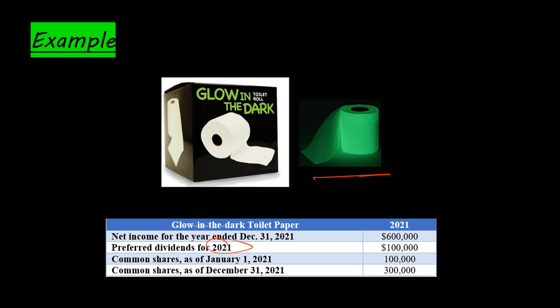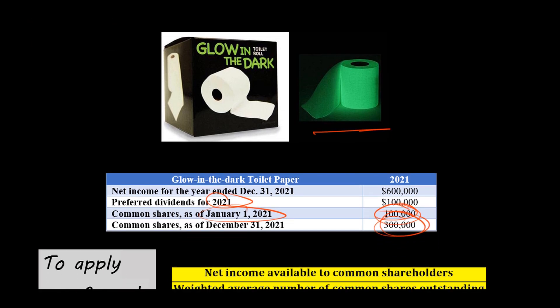At the beginning of the period, on January 1st, 2021, they had 100,000 common shares outstanding, and at the end of the period they had 300,000 shares outstanding. I'll need to give you some information about when the new shares were issued, because they went from 100,000 to 300,000 — so clearly there was a stock issuance.